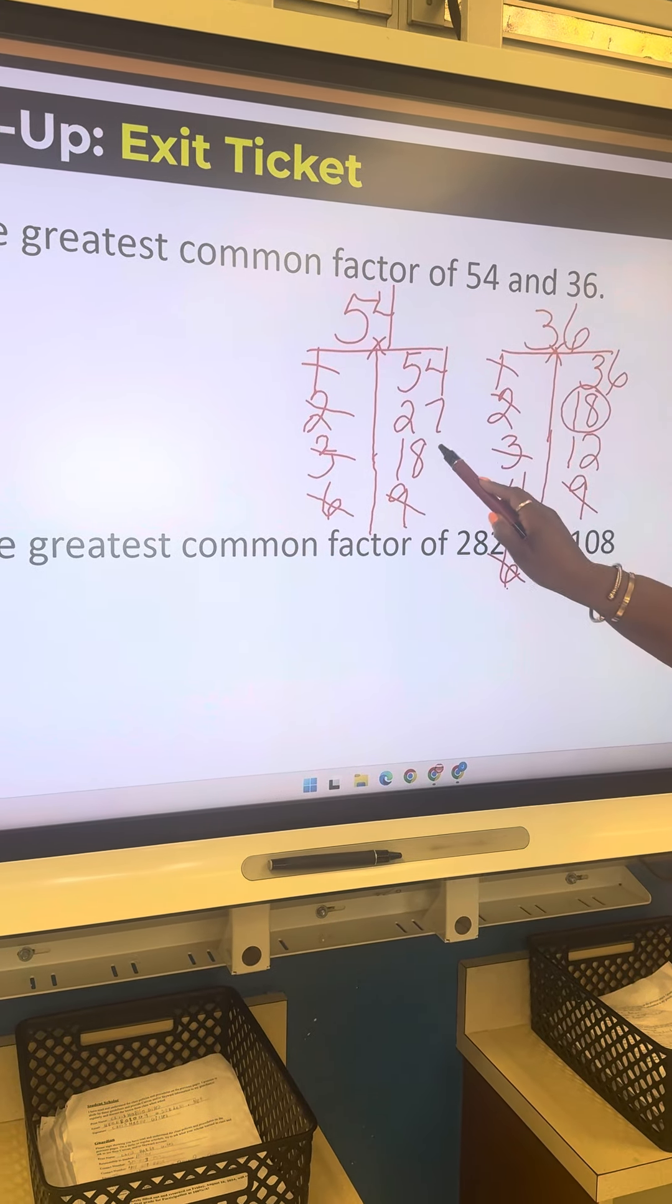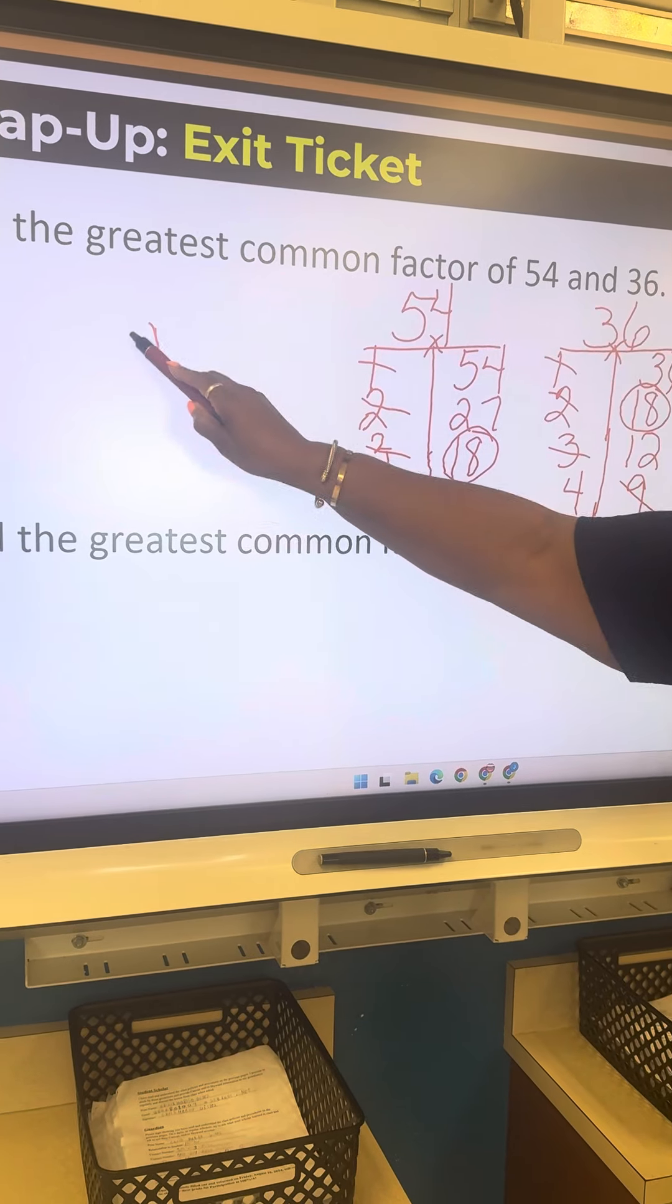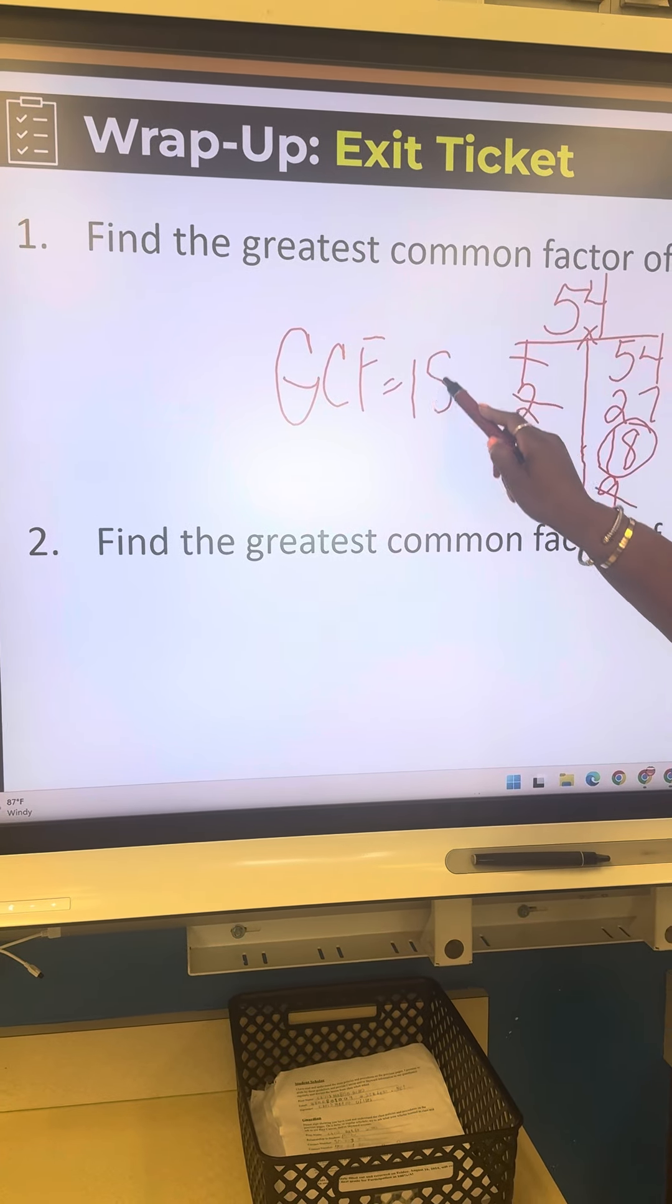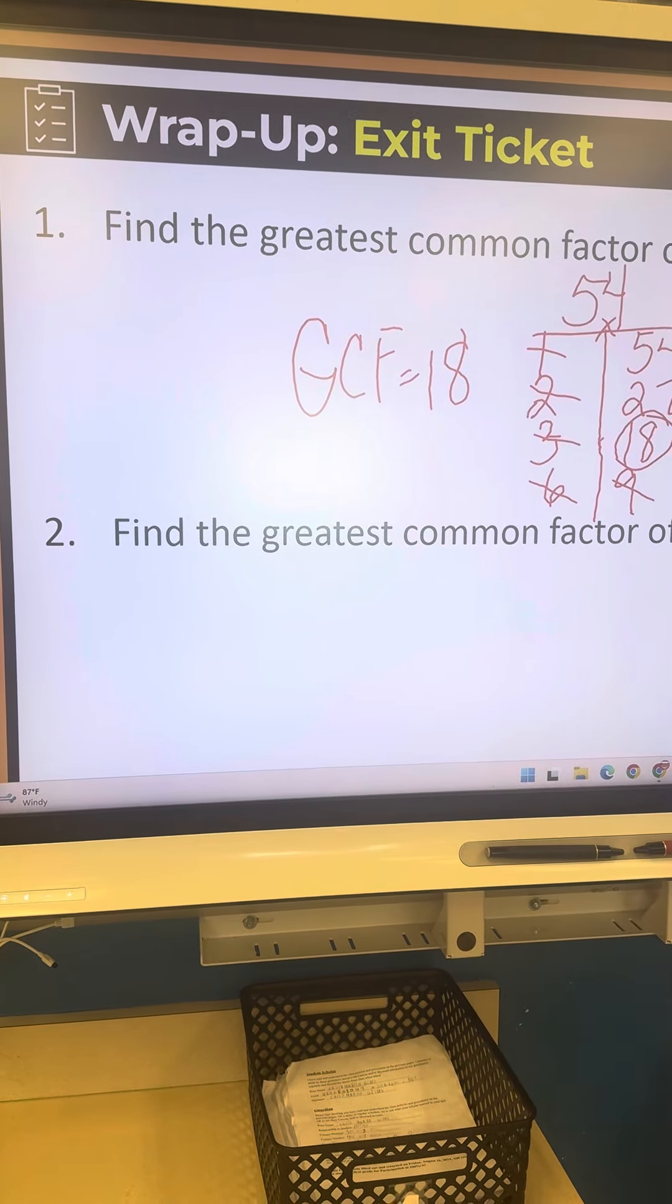Now I need to find the greatest common factor. We're going to cross out our one, cross out our two, cross out our three, cross out our six, cross out our nine.